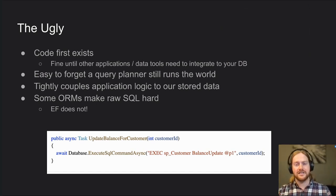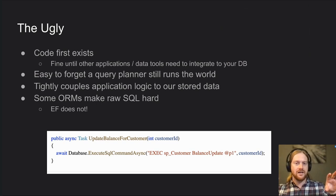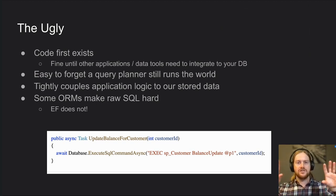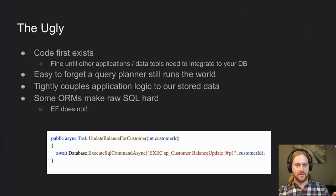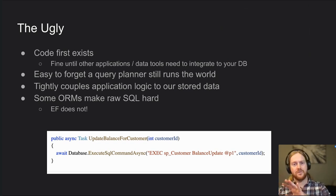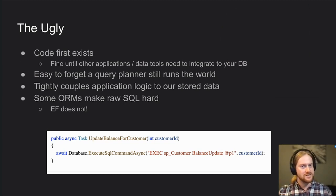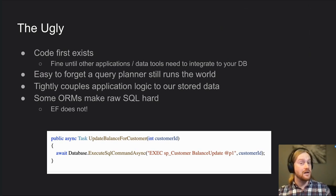Another problem I find is that ORMs tightly couple application logic to stored data. This isn't great for migration strategies. If you need to migrate from table A to table B, you now have to change the code and the database at the same time. You can't create the new data, migrate it without the code knowing about it yet, then cut over the code so it knows about both objects, then deprecate one. This four-pass approach for zero-downtime databases gets tricky with ORMs — especially if you change a column type, column name, or a foreign key or constraint relationship.